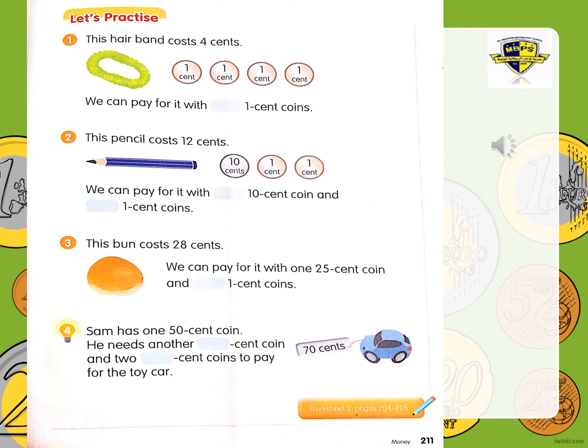Let's go on to the next one. This one costs 28 cents. How can we pay for that? We can pay for it with one 25-cent coin. And how many 1-cent coins? Let's count after 25 to make it 28: 26, 27, and 28. So how many 1-cent coins do we need? We need three 1-cent coins to pay 28 cents. Very good, KG2.